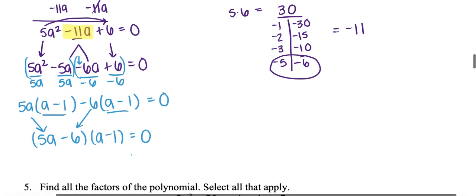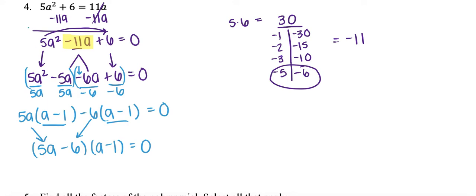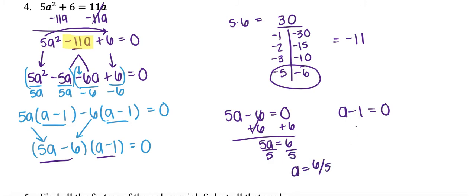Now on the test they'll probably tell you to solve or it'll just be equal to 0. Whenever it's equal to 0, that means I need to take both of these and set them both equal to 0, and then solve for a. For this I'm going to add 6 to both sides and then divide by 5, so I get a is equal to 6 fifths. On this one all I need to do is add 1 to both sides, so I get a is equal to 1. And so those are my two answers.